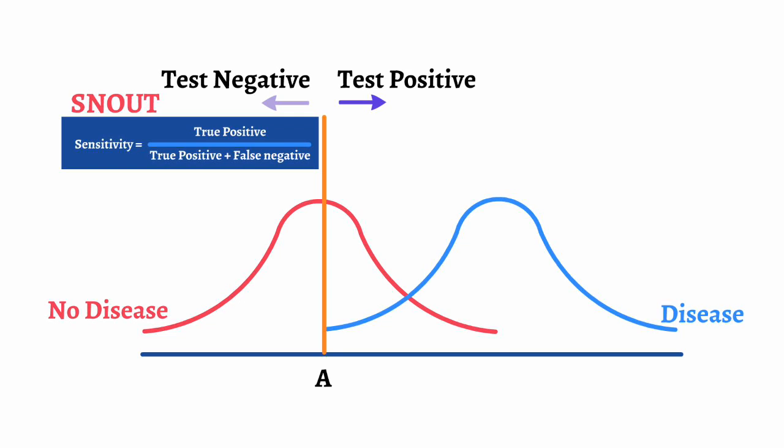Next, we will talk about specificity. Let's imagine test B is a highly specific test. Highly specific means that if the test is positive, the person has the disease. This is represented by line B — to the right of line B are all the people that have disease with no unaffected people present. But if you look left of line B, you will notice that a portion of people will test negative but have the disease. So highly specific tests are good at confirming if someone has the disease, but are not good at screening for a disease.